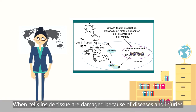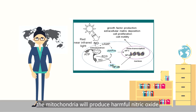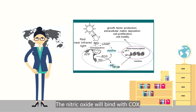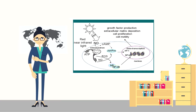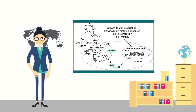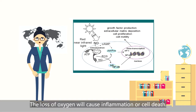When cells inside tissue are damaged because of diseases and injuries, the mitochondria will produce harmful nitric oxide. The nitric oxide will bind with cytochrome C oxidase and then displace needed oxygen from cells. The loss of oxygen will cause inflammation or cell death.